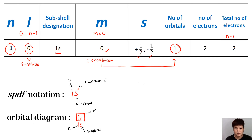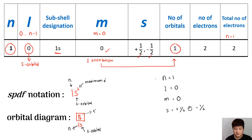So when n equals 1, l can be 0, and therefore m will be 0. The spin quantum number s can be positive half or negative half. This is the reason why we have the spdf notation and orbital diagram for n equals 1.